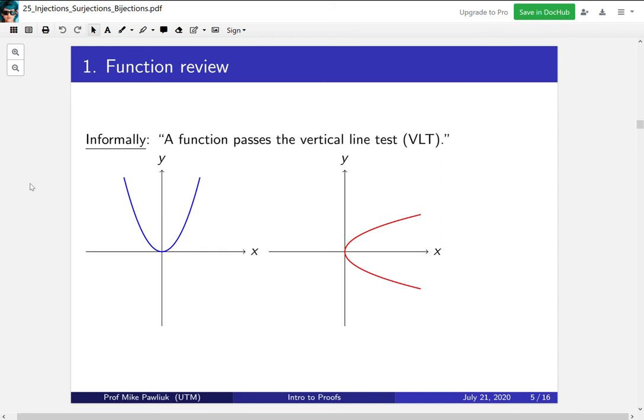Informally, a function is something that passes the vertical line test. So if you put a vertical line, it will only intersect the graph in at most one place. Whereas the curve over here on the right, if you draw a vertical line right here, it's going to cross this curve in two different places. So that's what it means to not be a function or to fail the vertical line test.